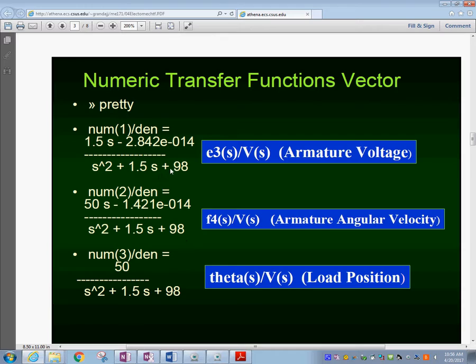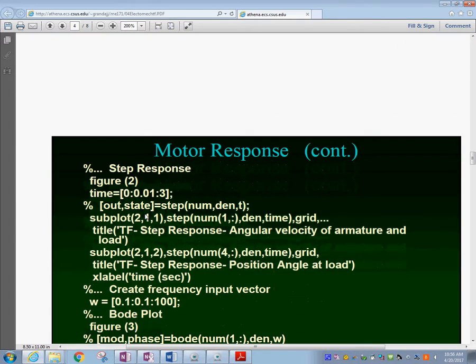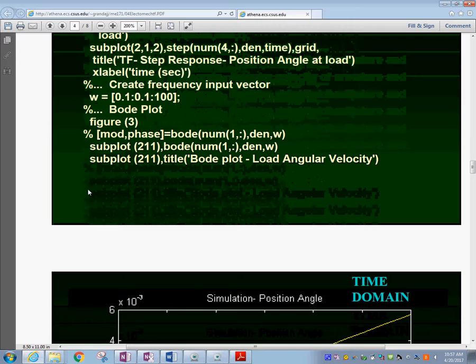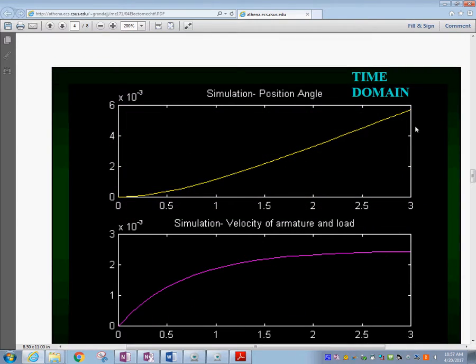This is the form that they will come: e3 over v of s, which would be the armature voltage, the angular velocity, and the load position. CAMP-G will set MATLAB up to produce all these transfer functions. Once you have the transfer functions, you could do a step input and the step response. That's what you have here: the position and then you have the velocity here.